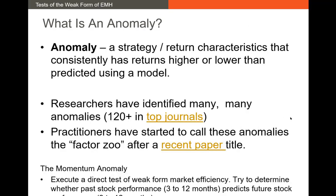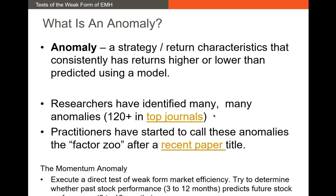Let's take a look at anomalous returns to see if we can determine whether the market is weak form efficient. An anomaly is a strategy or return characteristic that consistently outperforms or underperforms what the strategy would have yielded using a model like the CAPM. There is a huge amount of research out there on anomalies, going back all the way to the 1960s. If you want to see a list of these, click this link — there's a huge number of anomalies that have been found in the last several decades.